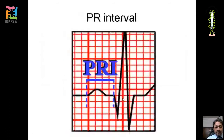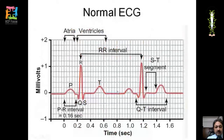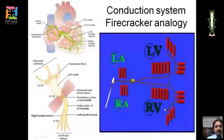This is the PR interval. The J point is the junction of the QRS and the ST segment. The ST segment starts at the J point and ends at the start of the T wave. Here we can also see the PR intervals and RR intervals. The QT interval has already been discussed.